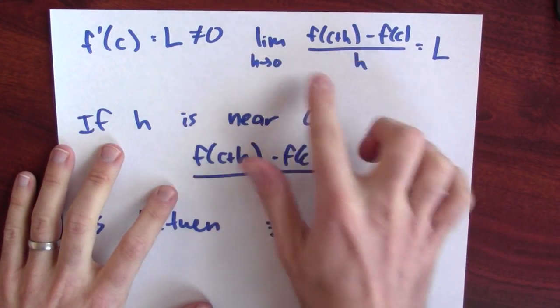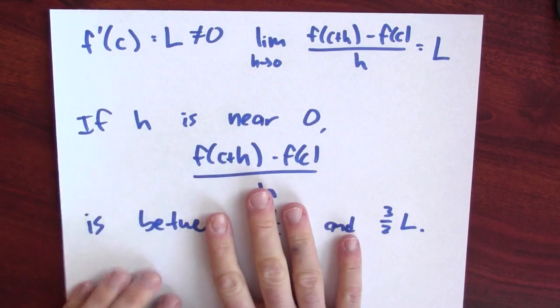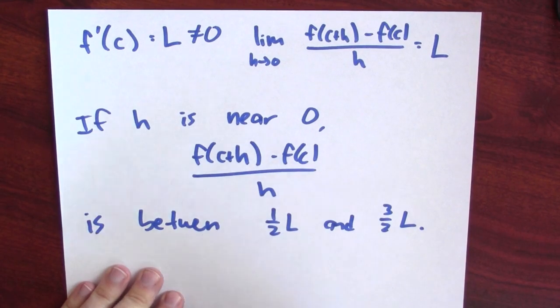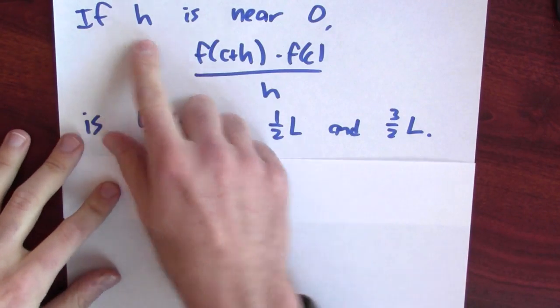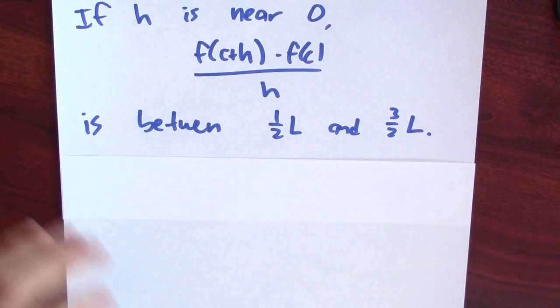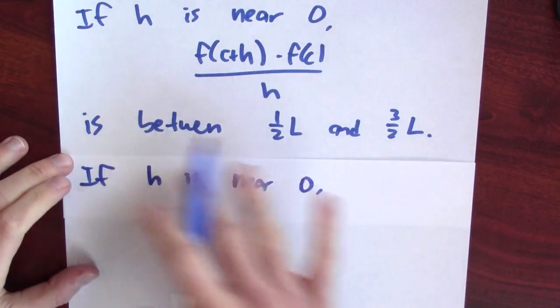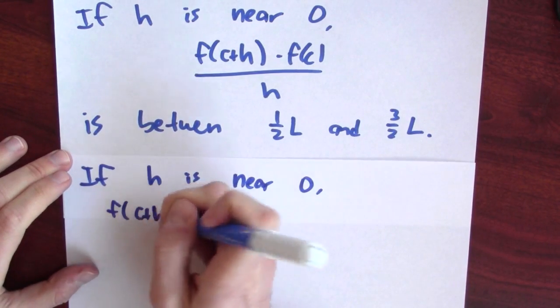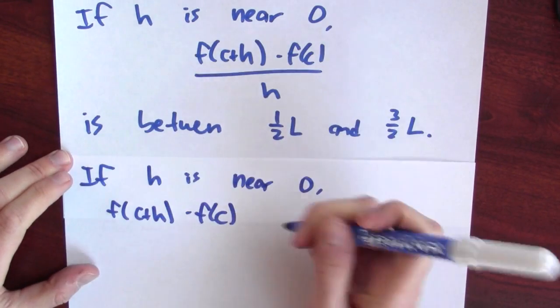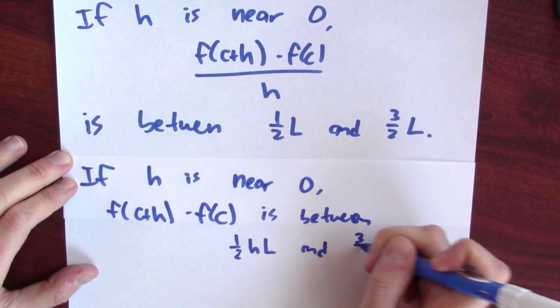Notice what just happened. I started with infinitesimal information — just a limit as h approaches 0 — and I've promoted this infinitesimal information to local information. Now I know that this difference quotient is between these two numbers as long as h is close enough to 0. We can continue the proof. If h is close enough to 0, this difference quotient is between one-half l and three-halves l. Multiplying all this by h, I find that f of c plus h minus f of c is between one-half hl and three-halves hl.